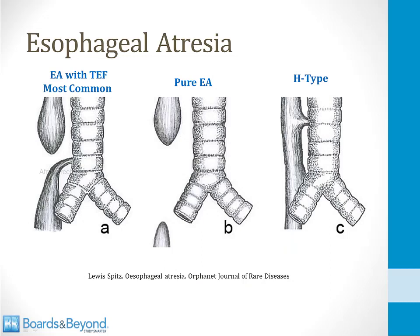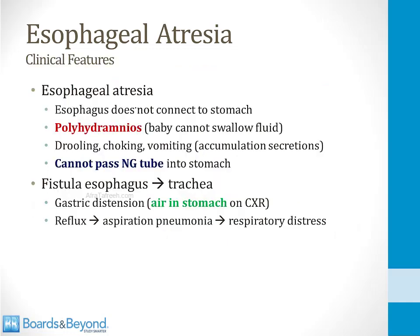There are three forms of esophageal atresia. The most common is esophageal atresia with a tracheoesophageal fistula — the proximal esophagus is cut off, but a fistula connects the trachea to the distal esophagus. Less common is pure esophageal atresia, where the esophagus ends in a blind tube with no tracheal connection. The rarest is H-type, where both are separate tubes connected by a fistula. In esophageal atresia, the esophagus doesn't connect to the stomach, so the baby cannot swallow amniotic fluid, causing polyhydramnios in the mother. After birth, these babies have drooling, choking, and vomiting from secretion accumulation.